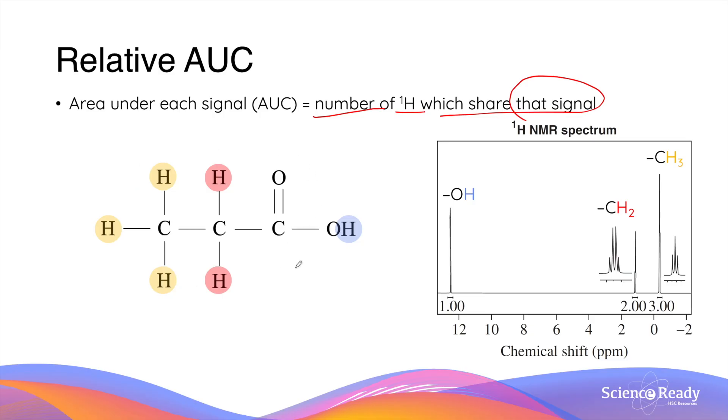Again, let's use propanoic acid to explain this feature. As we saw earlier, there are three chemical environments in propanoic acid. However, in each chemical environment, there are a different number of protons.